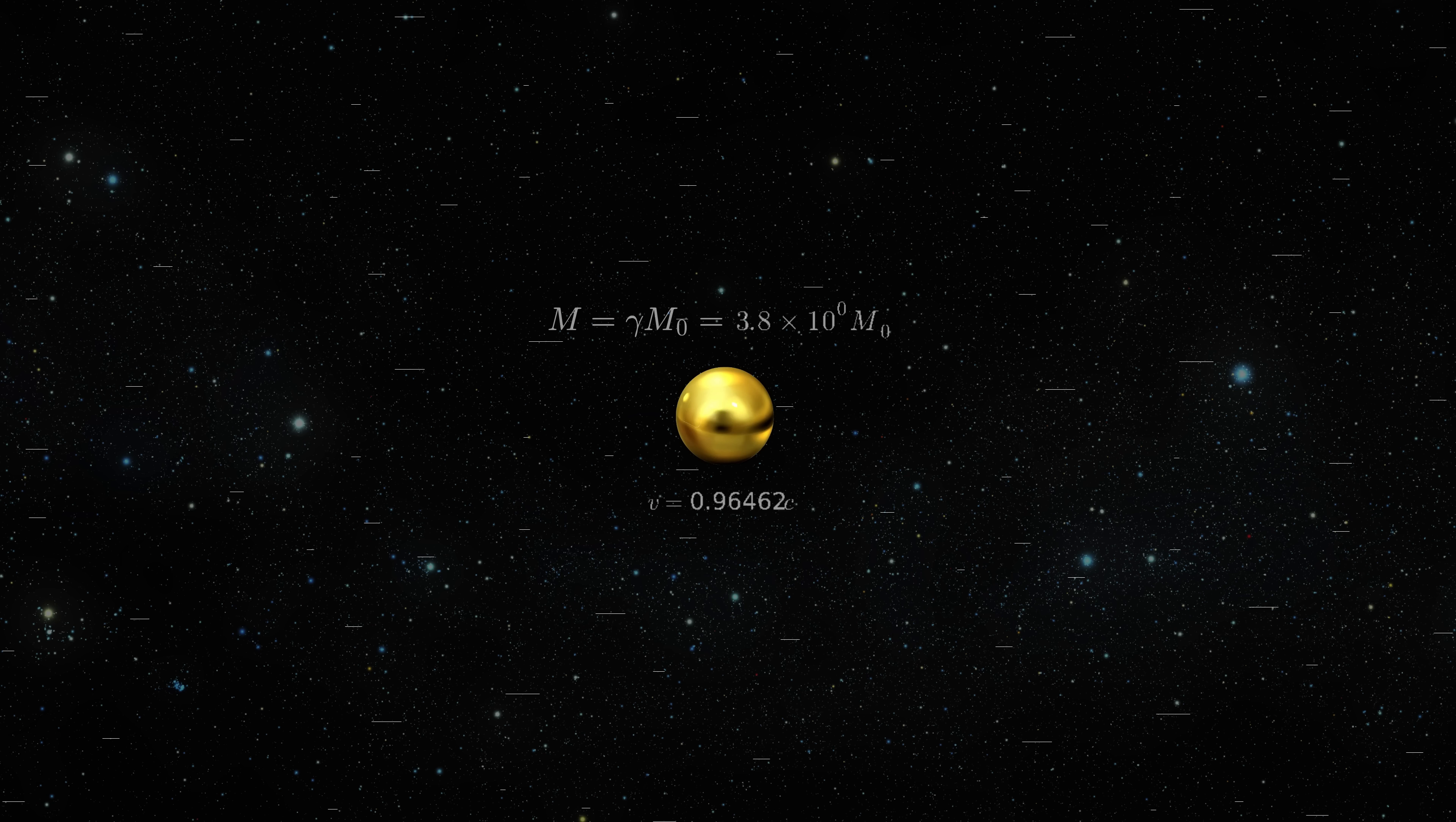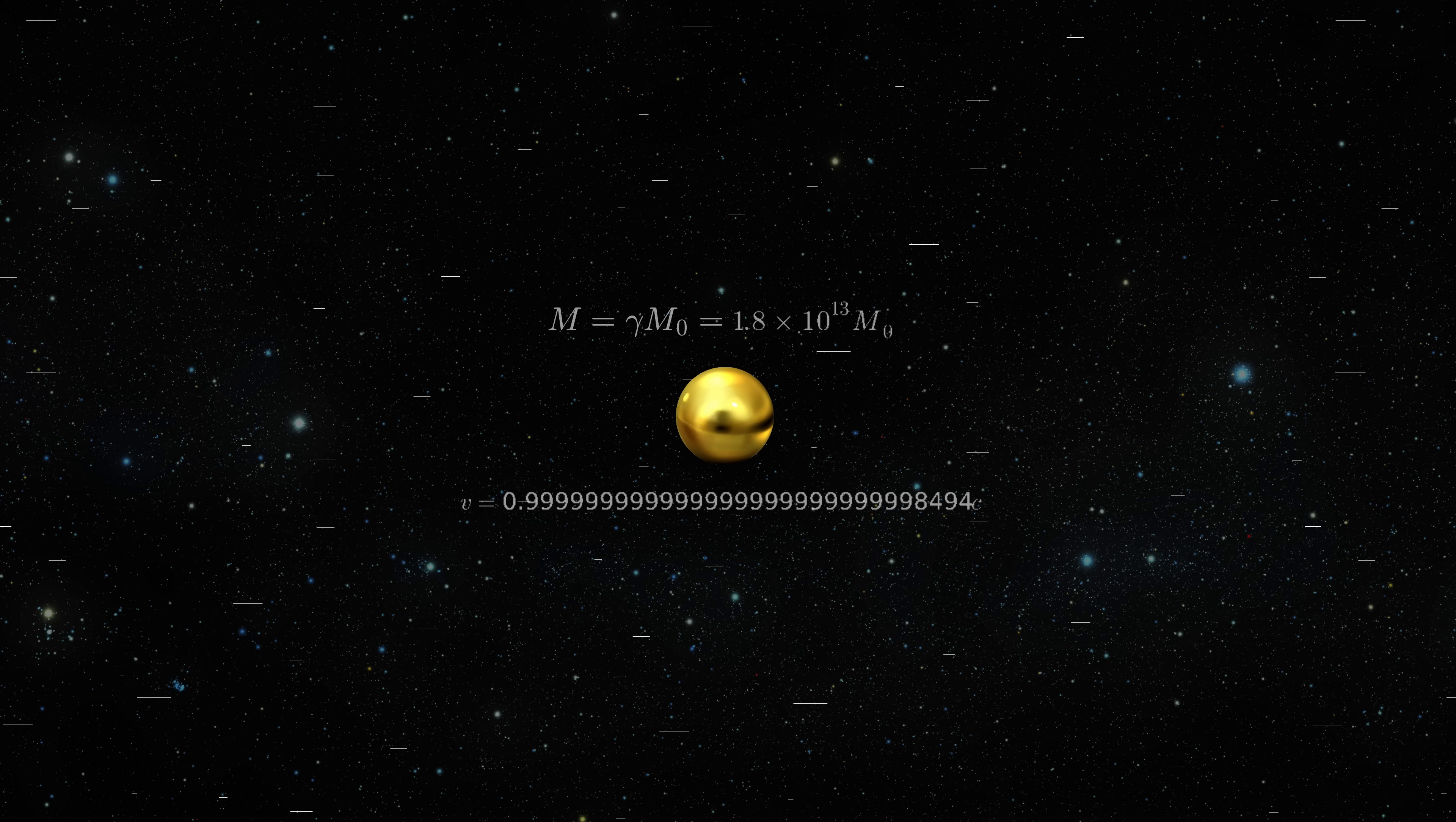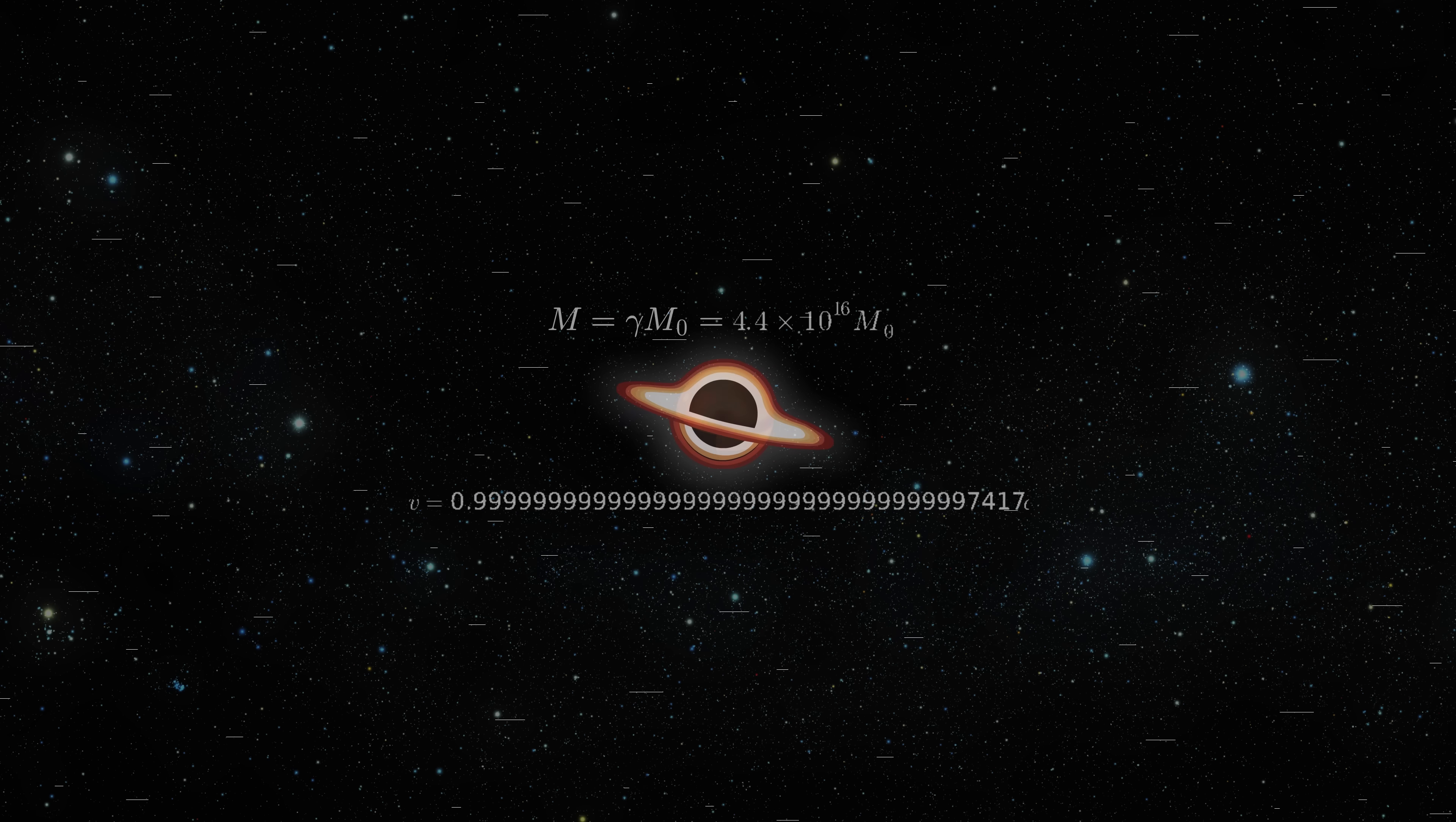Now the ball starts moving and in special relativity there is the concept of the so-called relativistic mass, which is given by the stationary mass of the ball times the gamma factor. So you can imagine that if the velocity of the ball becomes too large, the mass will increase so large that this ball becomes a black hole.